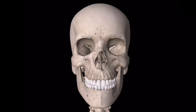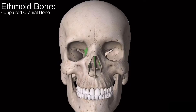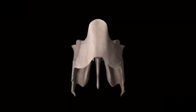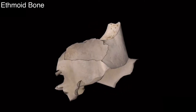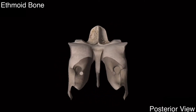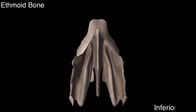In this video, I will discuss the ethmoid bone in detail. This green is the ethmoid bone. The ethmoid bone is an unpaired cranial bone located between the two bony orbits, as you can see. Now let me isolate the ethmoid bone for you. This is the ethmoid bone with the anterior view, the lateral view, the posterior view, the superior view, and the inferior view of the ethmoid bone.